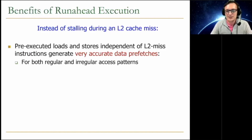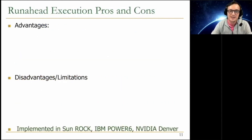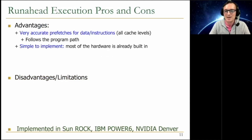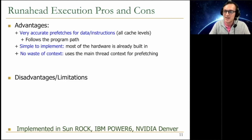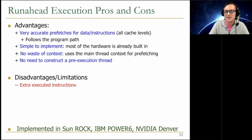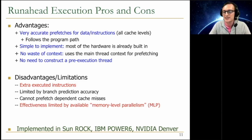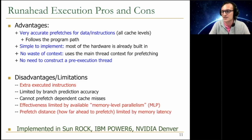This leads to a lot of benefits: very accurate data prefetches for both regular and irregular access patterns, instructions are also prefetched, and hardware prefetch and branch predictor tables are trained. With any idea there are advantages and disadvantages. You follow the program path, it's simple to implement, most of the hardware is already built in, and compared to other pre-execution-based prefetching techniques, there is no waste of context. But there are disadvantages: extra executed instructions, limited by branch prediction accuracy, you cannot prefetch dependent cache misses just like a large instruction window, and effectiveness is limited by available memory-level parallelism.